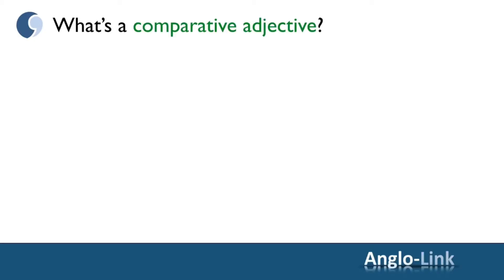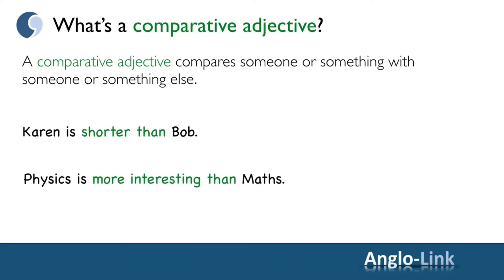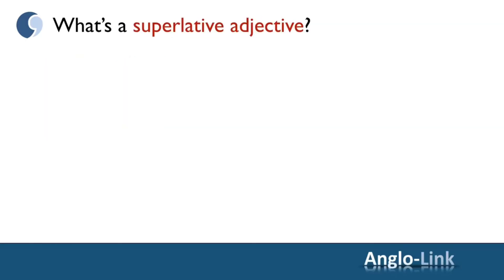A comparative adjective compares someone or something with someone or something else. For example, Karen is shorter than Bob, or physics is more interesting than maths.